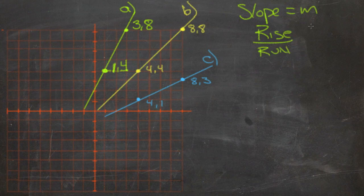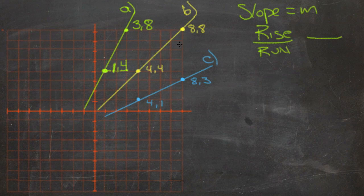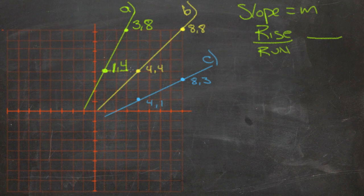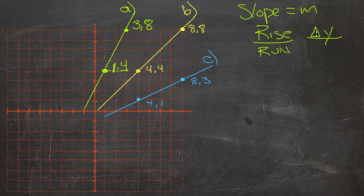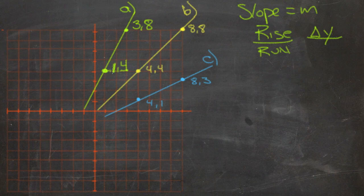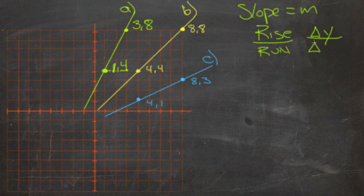And what that means is we figure how much the two points change from one to the other on the y-axis or how much up-down there is. And sometimes that's written as delta y. Delta means change in. So we have change in y, so up-down. And that's divided by change in x, so change left to right, delta x.